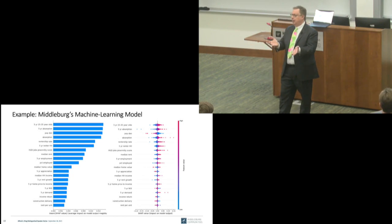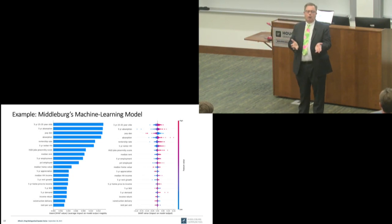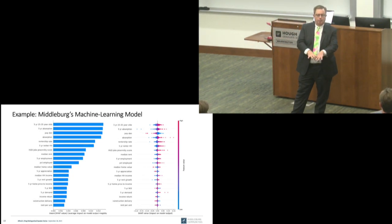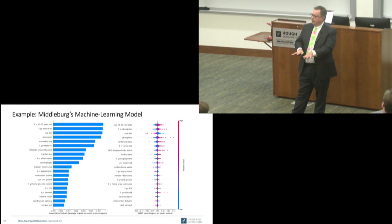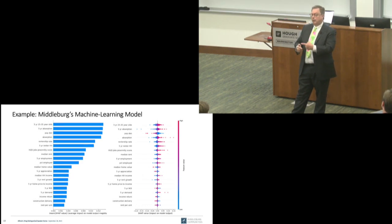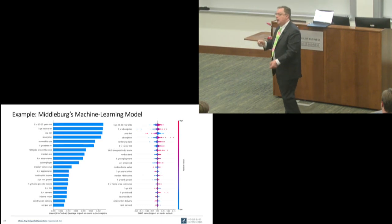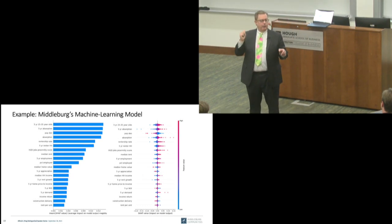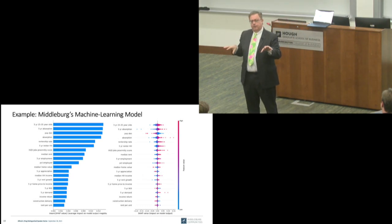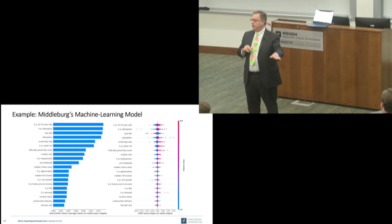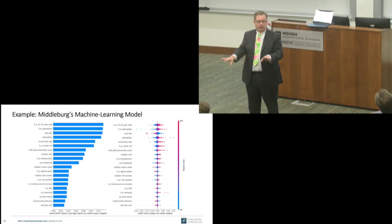Census tracts are divided into block groups — typically two or three per tract, with blocks under that. There's very little data at the block level but a good amount at the block group level. It's older data, but for our purposes all we're trying to say is how does this location differ from that one. I don't care that population density has changed over time; I care that it's much more dense here than there.